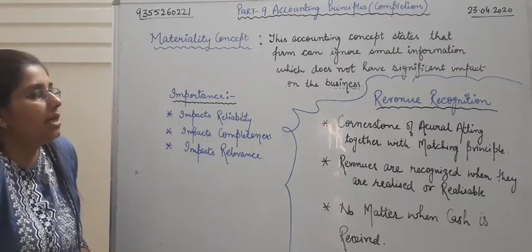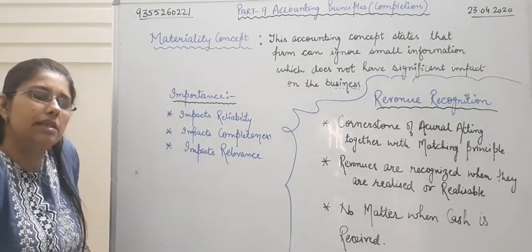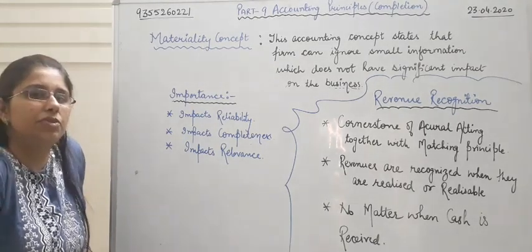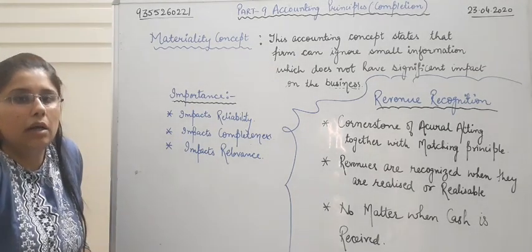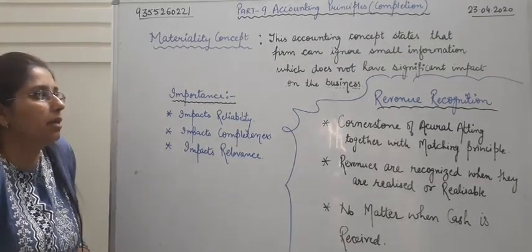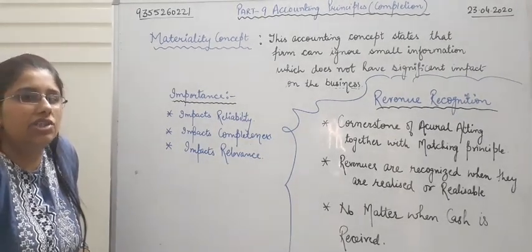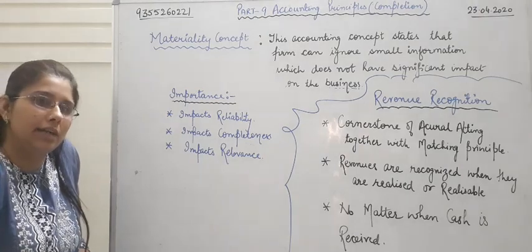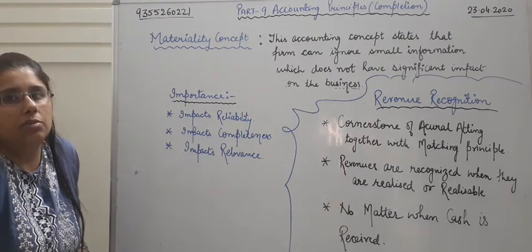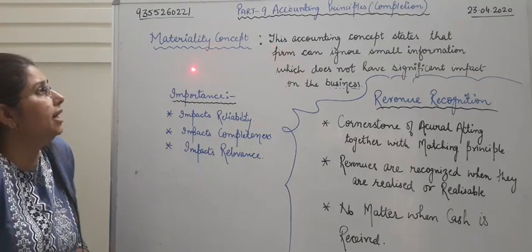We have learned a lot of concepts — full disclosure, business entity, going concern, conservatism — a lot of concepts we have gone through previously. Now what we will be going to do is cover the remaining two pending concepts, and later on in the revision class I will take the whole concept again so that you could understand what the basic accounting principles are. Today we will start with the materiality concept.